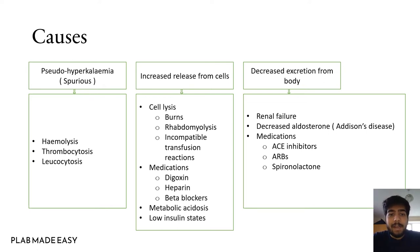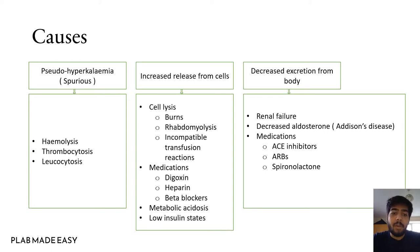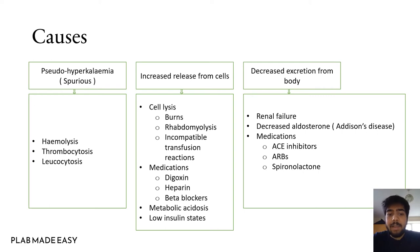The second mechanism is increased release from cells. It can be due to cell lysis such as in burns, rhabdomyolysis, transfusion reactions, or it can be due to medications such as digoxin, heparin, and beta blockers. It can also be due to metabolic acidosis and low insulin states.